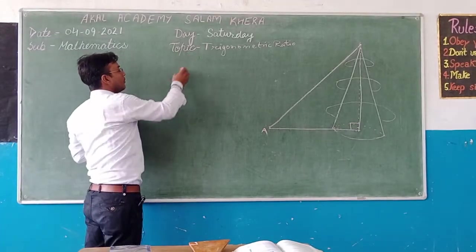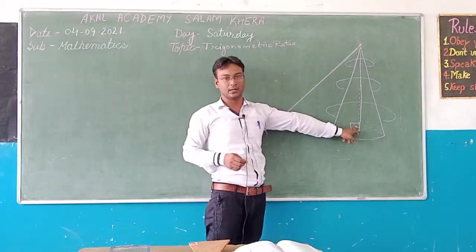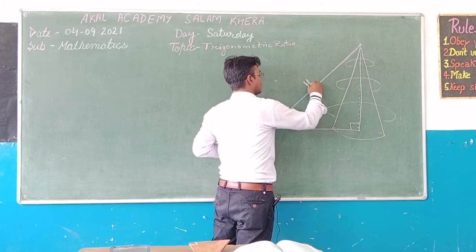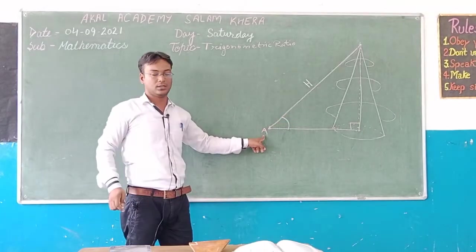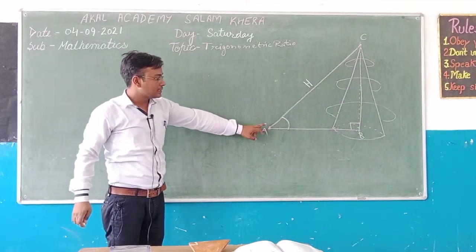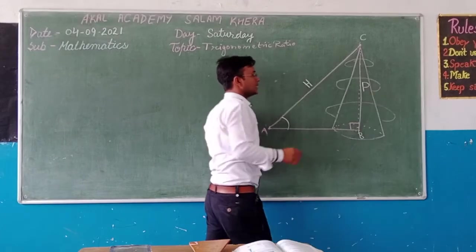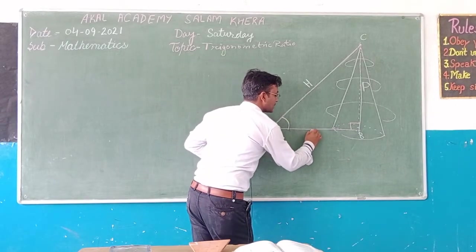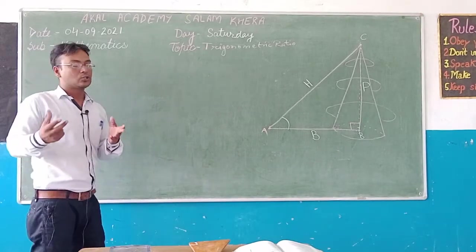Now, how do you find the ratios of these trigonometric sides? Look here. This is the right angle, and the side opposite to the right angle is known as the hypotenuse. You also have one acute angle A, and the side opposite to the given acute angle is called the perpendicular. The remaining side is the base. So the three sides are: hypotenuse, perpendicular, and base.